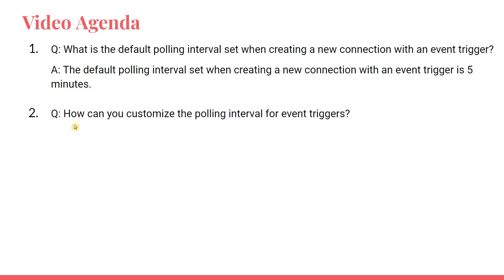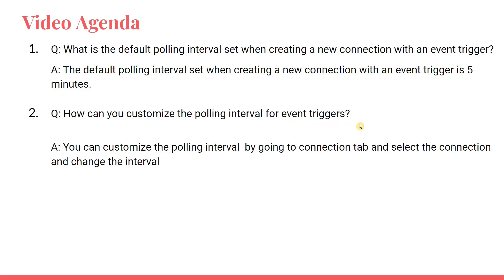Second question: How can you customize the polling interval for event triggers? You can customize the polling interval by going to the connection tab, selecting the connection, and changing the interval.